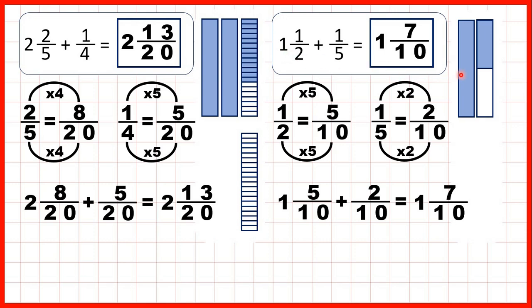Then we had 1 and a half, and we were adding 1 fifth. We changed the half into 5 tenths, and the fifth into 2 tenths, and because they both have the same denominator, we can add them together, and that gave us our answer 1 and 7 tenths.